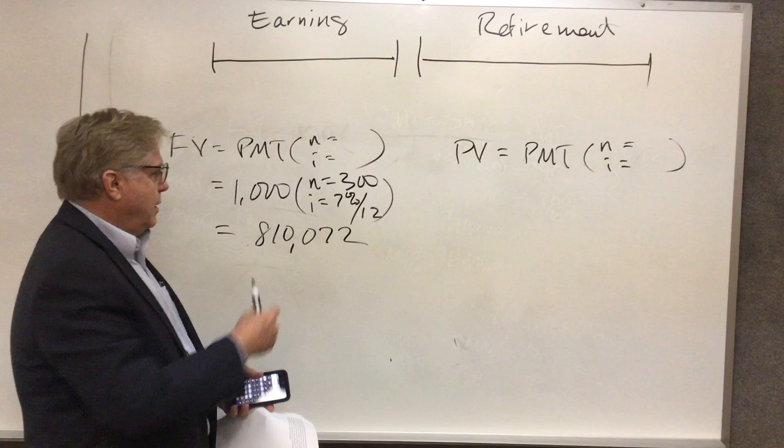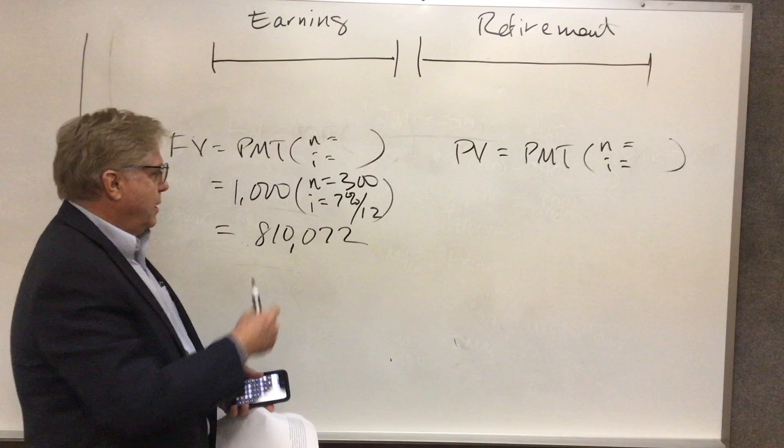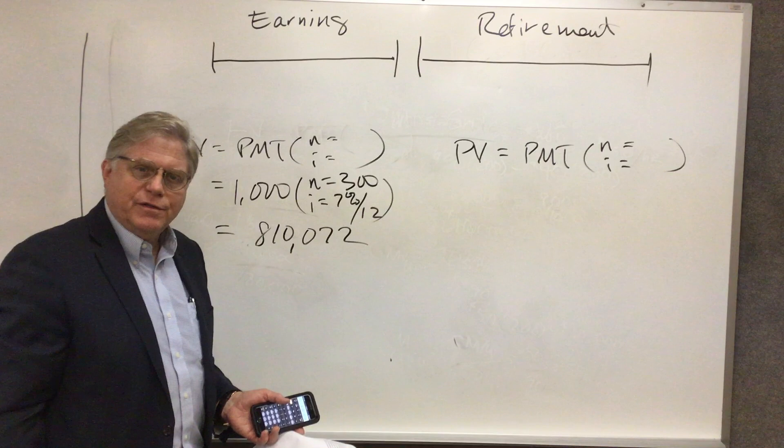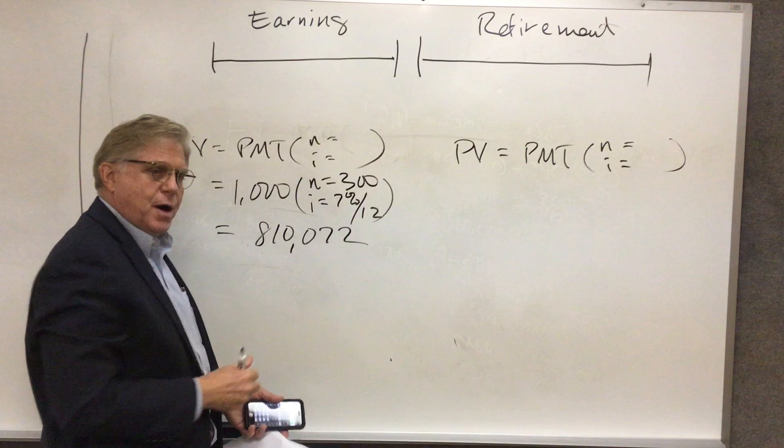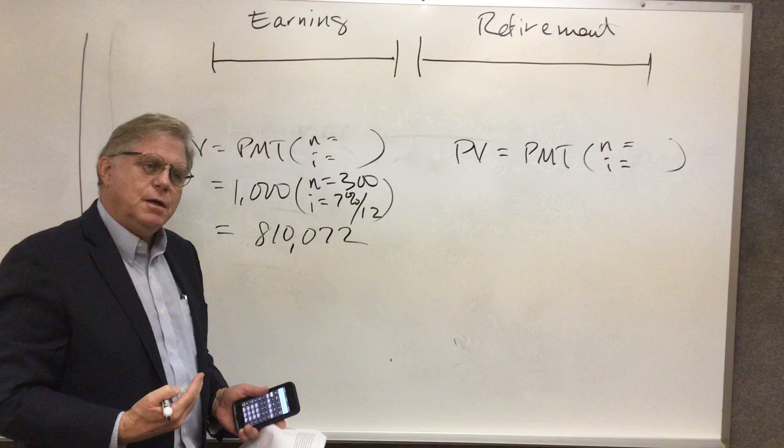Well, in reality, I'm paying this in order to get this, to have that amount to withdraw in the future. And so I could have put this in as $1,000 negative, and this would have been positive. But it's something you'll want to know that you need to be very specific about cash inflows and outflows with the calculator. Anyway, let's go with this one: $810,072.